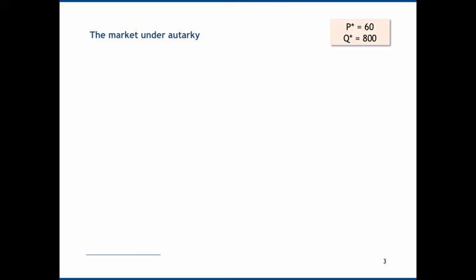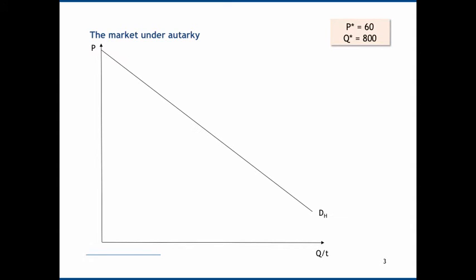Let's have a look at this graphically. We're looking at the market under Autarchy, i.e. in the absence of foreign trade. We have price on the y-axis and quantity on the x-axis, with a downward sloping demand curve and an upward sloping supply curve. I'm using the subscript h to refer to the home market, and demand and supply intersect when price equals 60 and quantity is 800.